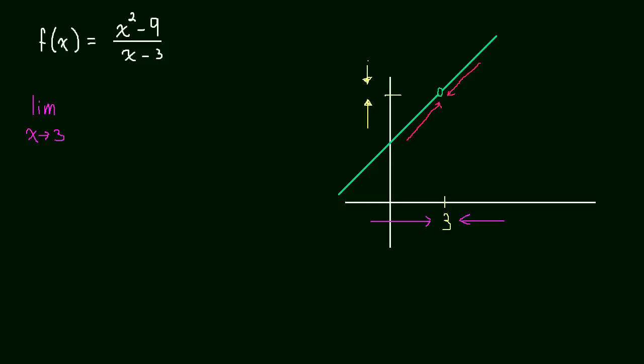So to take the limit of x squared minus 9, x squared minus 9, all over x minus 3, to take this limit, how are we going to do it? Well, the method we're going to use right now is to actually just take an estimate.